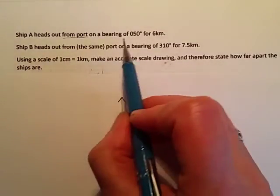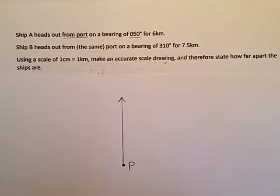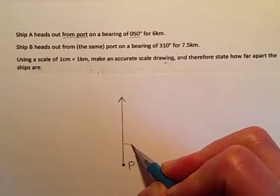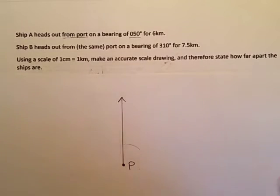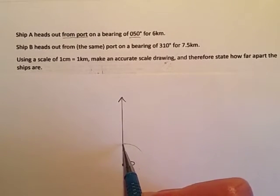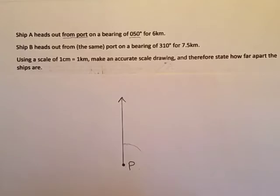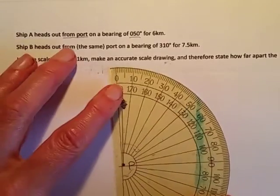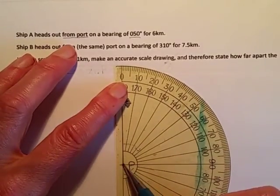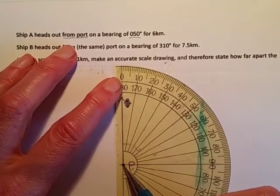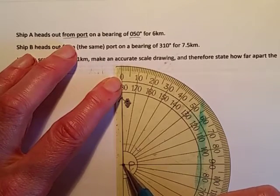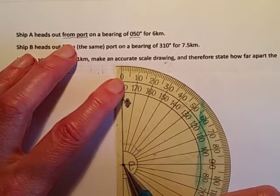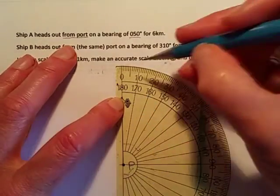So ship A is on a bearing of 50 degrees. Now remember bearings are always measured clockwise from the north line, so we need to measure an angle of 50 degrees from here in this direction. We'll get our protractor, line it up. The centre of the protractor goes at the port, the place where the bearings are being measured from. Centre of the protractor there, obviously lined up with your north line.